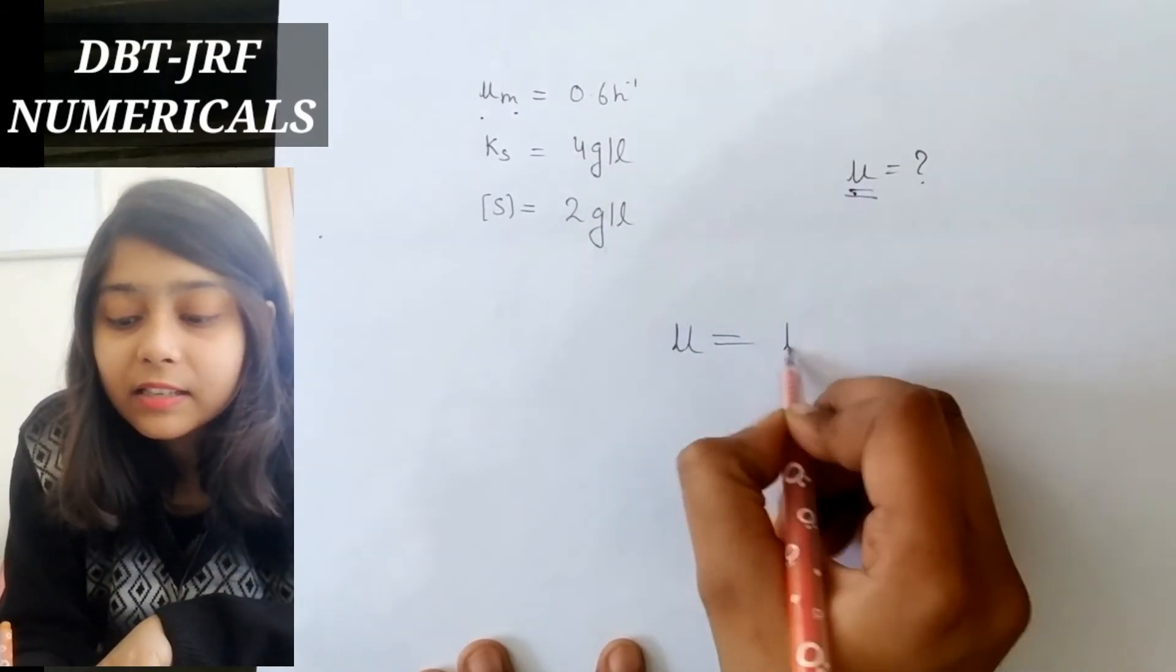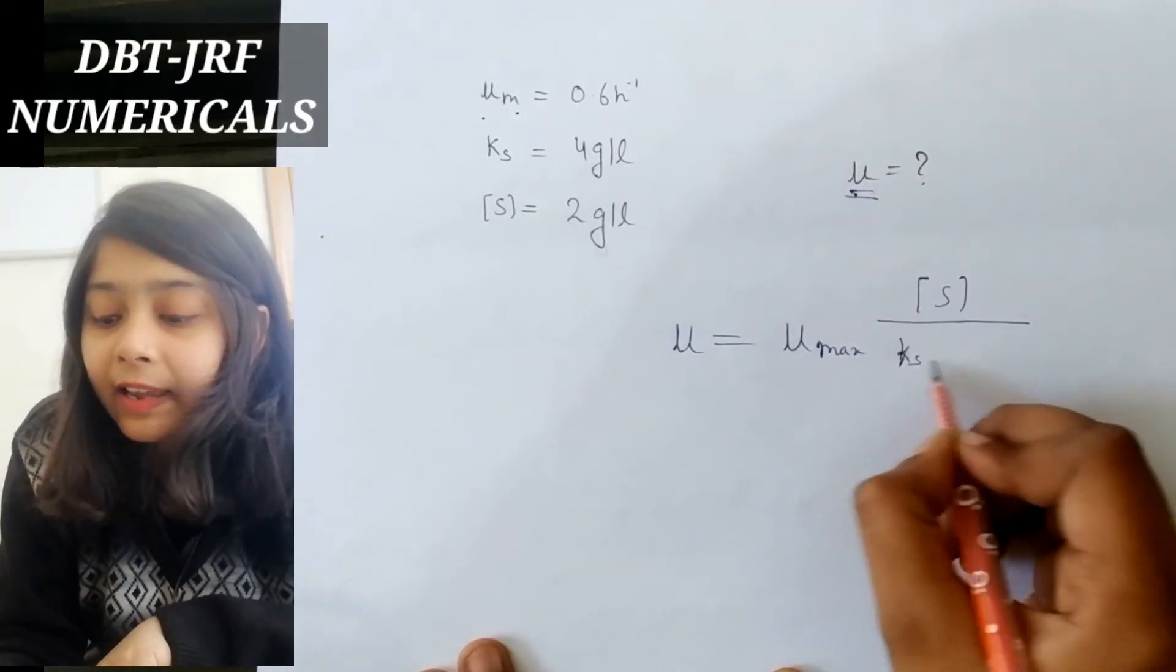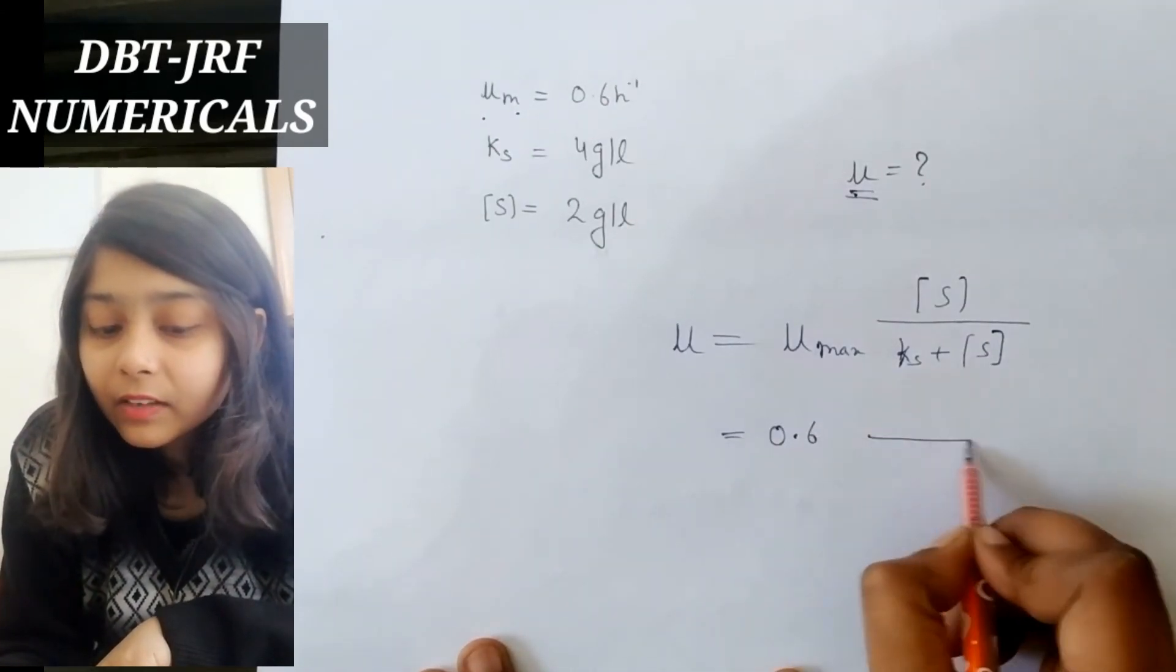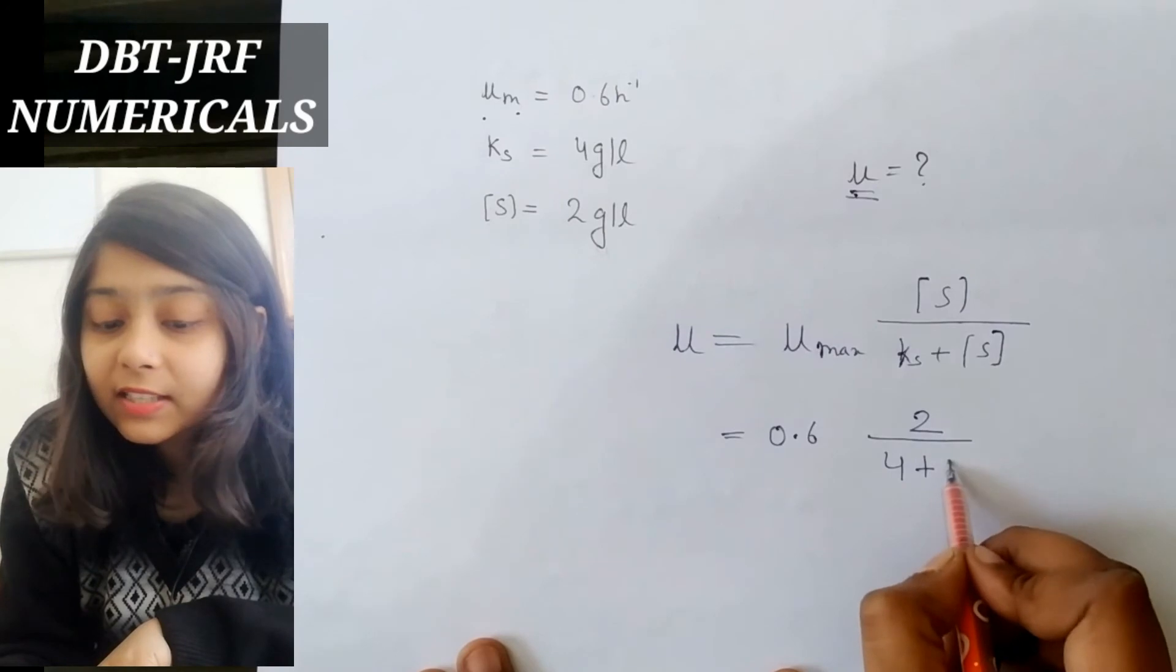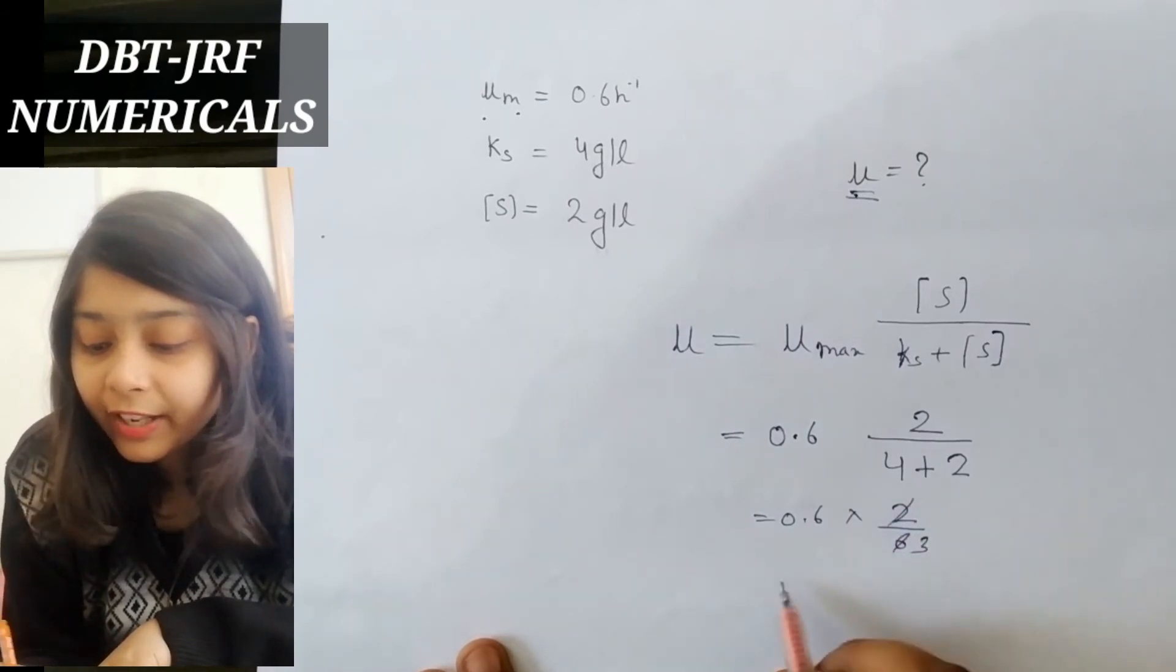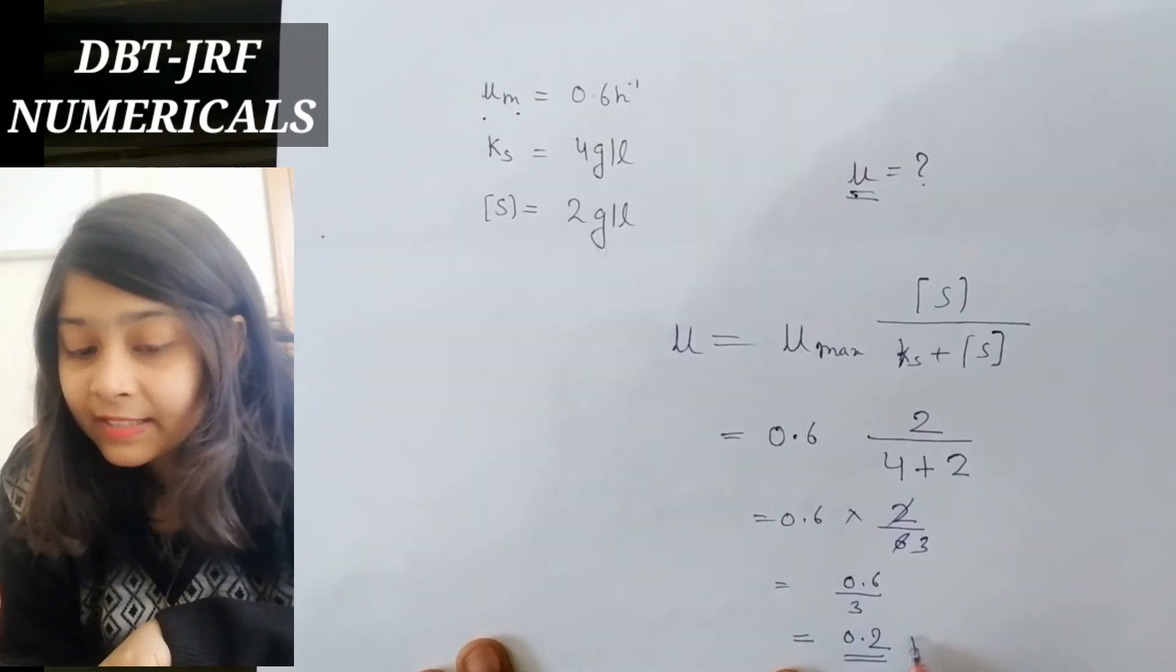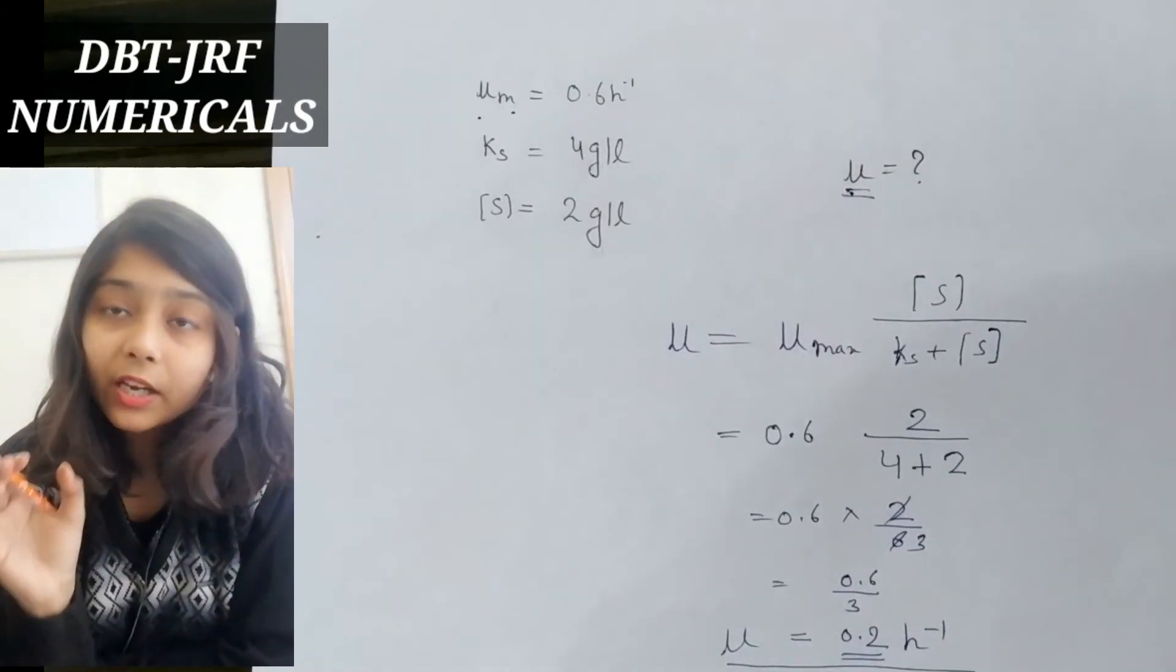So how to find mu? Mu equals mu max multiplied by substrate divided by ks plus substrate. So mu max is 0.6, substrate concentration is 2, ks is 4, and substrate concentration is 2. So 2 divided by 6, 0.6 divided by 3 equals 0.2. This means the growth rate is 0.2 per hour.